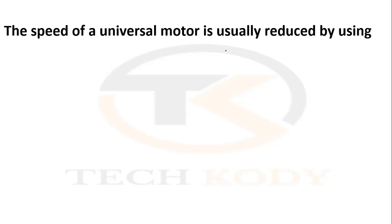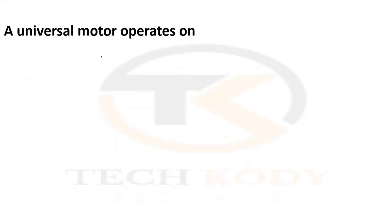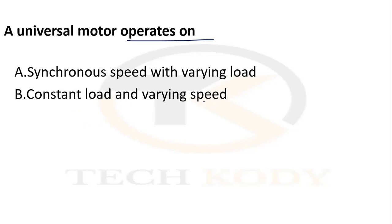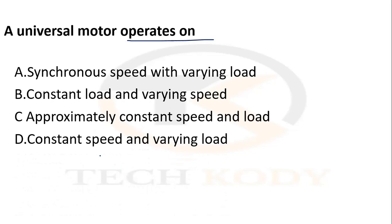The speed of a universal motor is usually reduced by: gearing, belts, breakers, or chains. By using gearing, you can reduce the speed of the universal motor. Regarding operating characteristics, the universal motor operates at approximately constant speed and load.